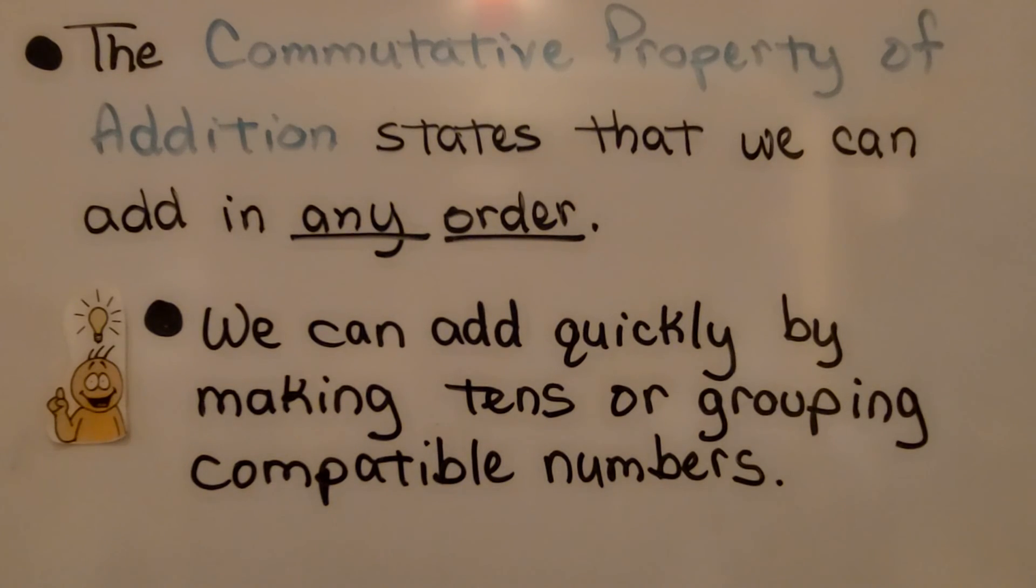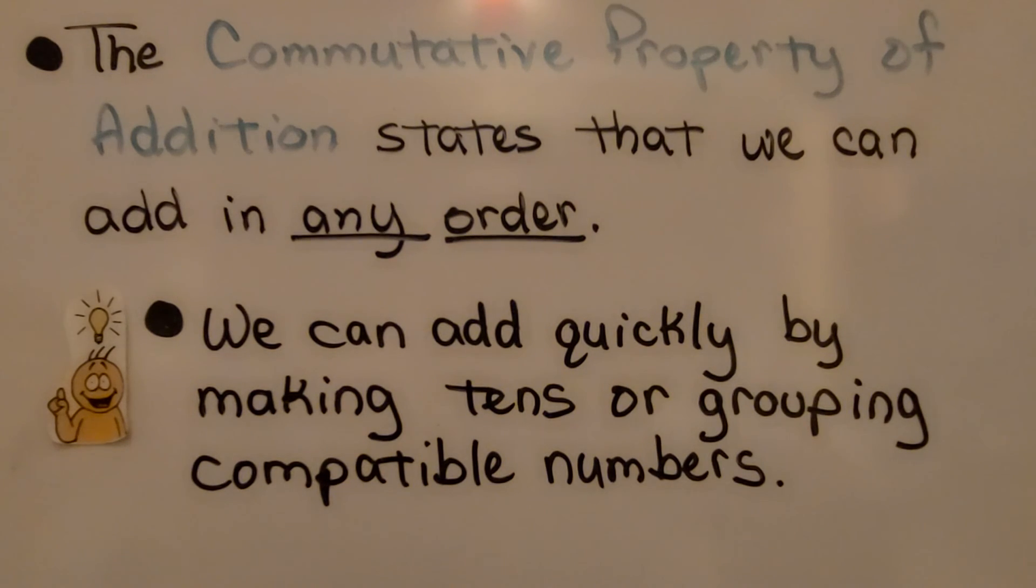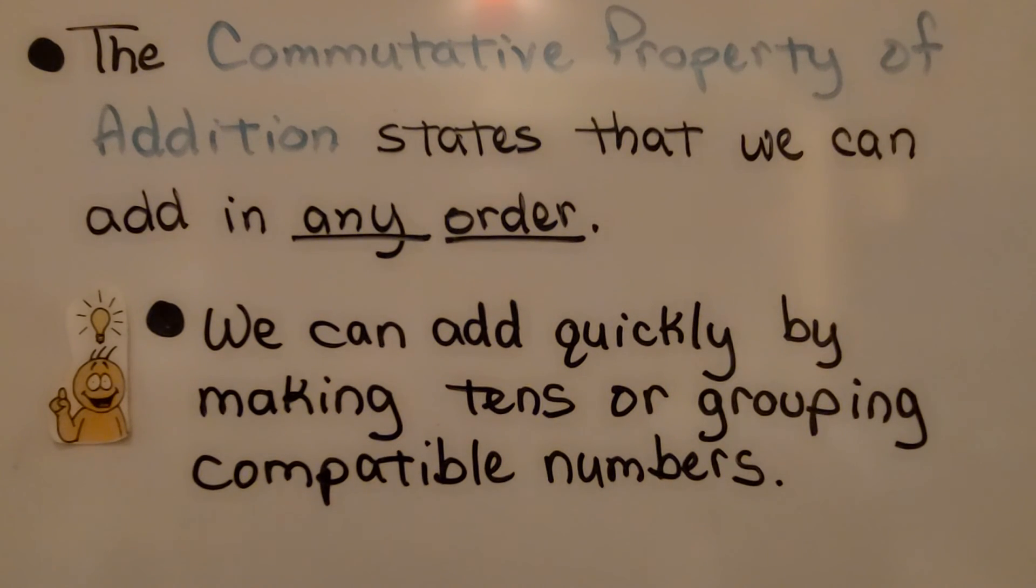The commutative property of addition states that we can add in any order. We can add quickly by making tens or grouping compatible numbers.